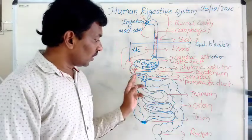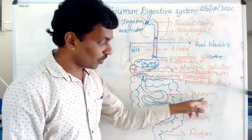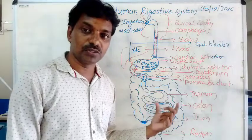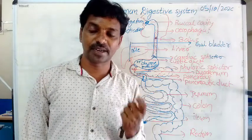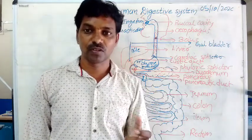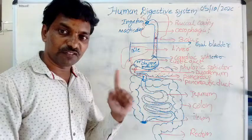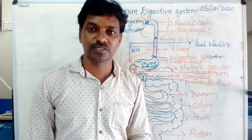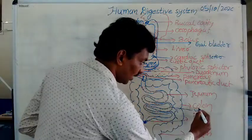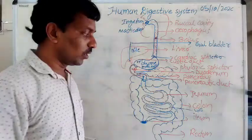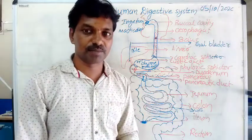The food then reaches the second part of the small intestine — the coil-like structure called jejunum. In the jejunum, there are finger-like structures located on the inner surface of the small intestine called villi. Villi absorb the digestive substances.